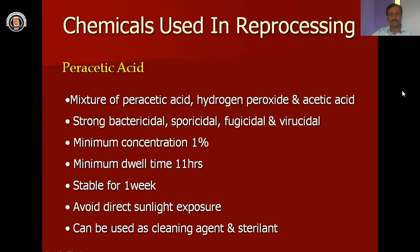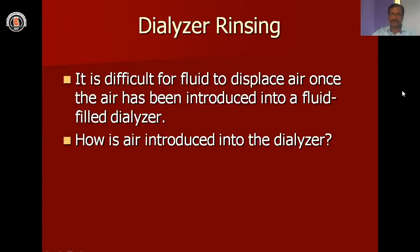The minimum concentration of thoracic acid should be at the rate of 1%, and the minimum time it should be kept is at least 11 to 12 hours. The basic thing is how the dialysis reprocessing should be done. It is difficult for the fluid to displace the air once the air has been introduced into the fluid-filled dialysis.